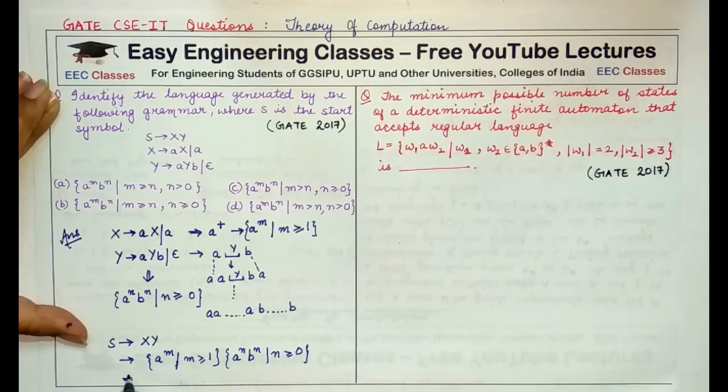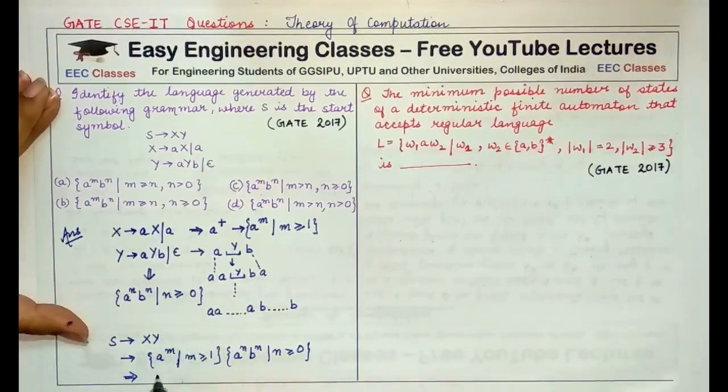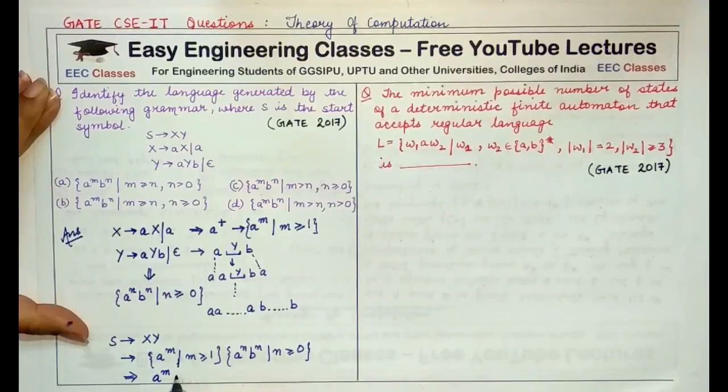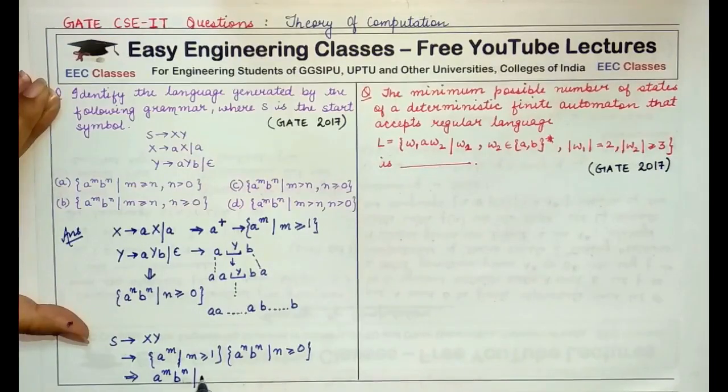Obviously, the final result or the language that would be formed would look like A raised to the power M. That means M number of times A followed by N number of times B such that M is greater than N because here M represents the sum of this M and N.